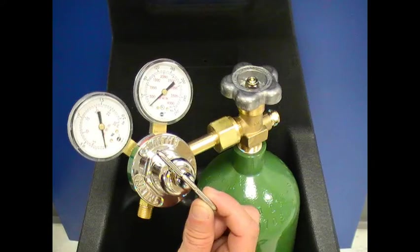The regulator dial controls the pressure that will be used to run the torch. This is identified by the gauge on the left. The gauge on the right identifies how much pressure is being stored within the tank. When this gauge is at zero, the tank needs to be refilled.